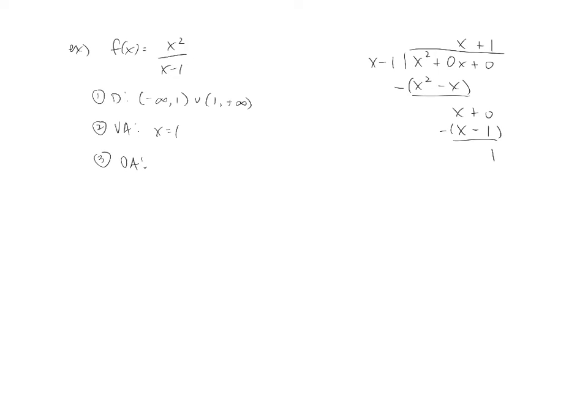Now when doing this, and you're going to come up with a remainder sometimes, completely disregard the 1. Completely disregard the remainder. The oblique asymptote is actually going to be this thing right here. So for us, y equals x+1 would be the oblique asymptote.